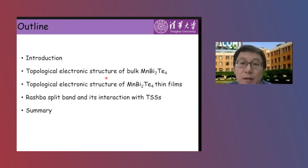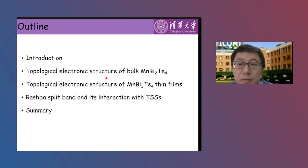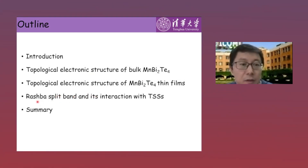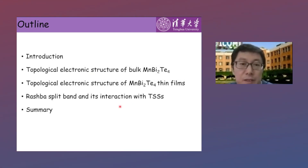In this talk, I will first introduce the experimental tool and the research background. Then I'll compare the topological electronic structure of the bulk sample and the thin films. Then I will focus on the observation of the Rashba-split band and its interaction with the topological surface states. Finally, I will give a brief summary.